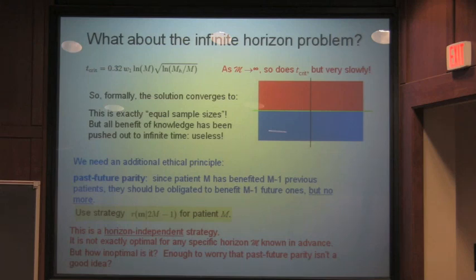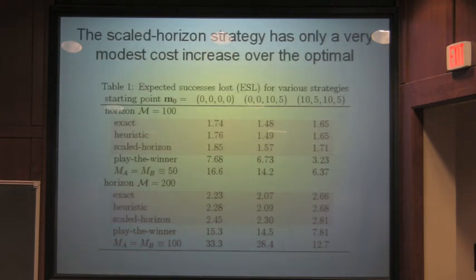So, if we take this ethical principle, we have a new horizon independent strategy, we have a convergent strategy, and we can ask how well it does. And this is exactly the same table as before, but now I'm going to explain the one remaining line. The one remaining line is this scaled horizon, as I call it. And, what do we expect to see? Well, if this number were hugely bigger than these numbers, you'd say, I don't think you have a very good ethical principle going there. You might think it's ethical, but you're killing a lot of patience. So, the payoff is essentially that the numerical experiment shows that although the scale horizon strategy is measurably larger than either the exact or heuristic strategies, it's larger by very small amounts compared with the difference to any other strategy that has been proposed.